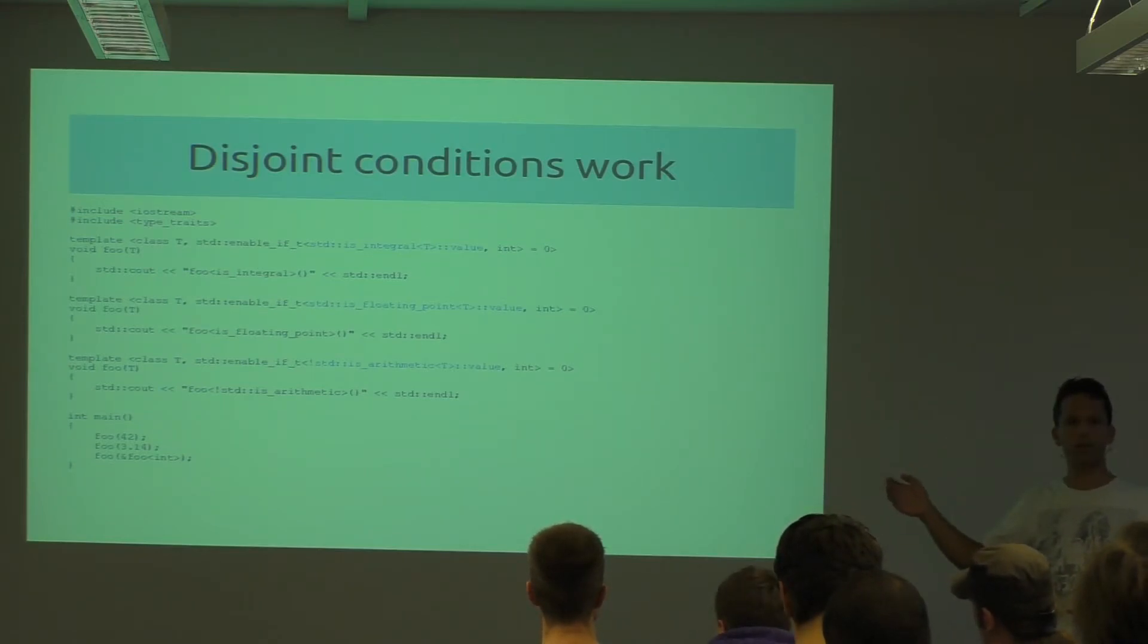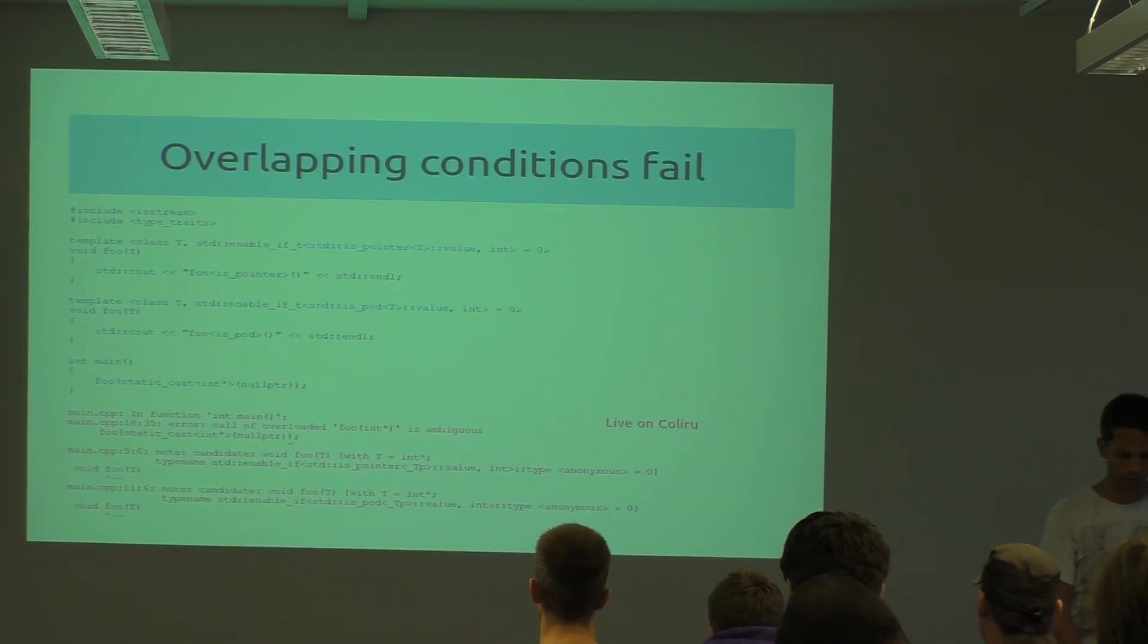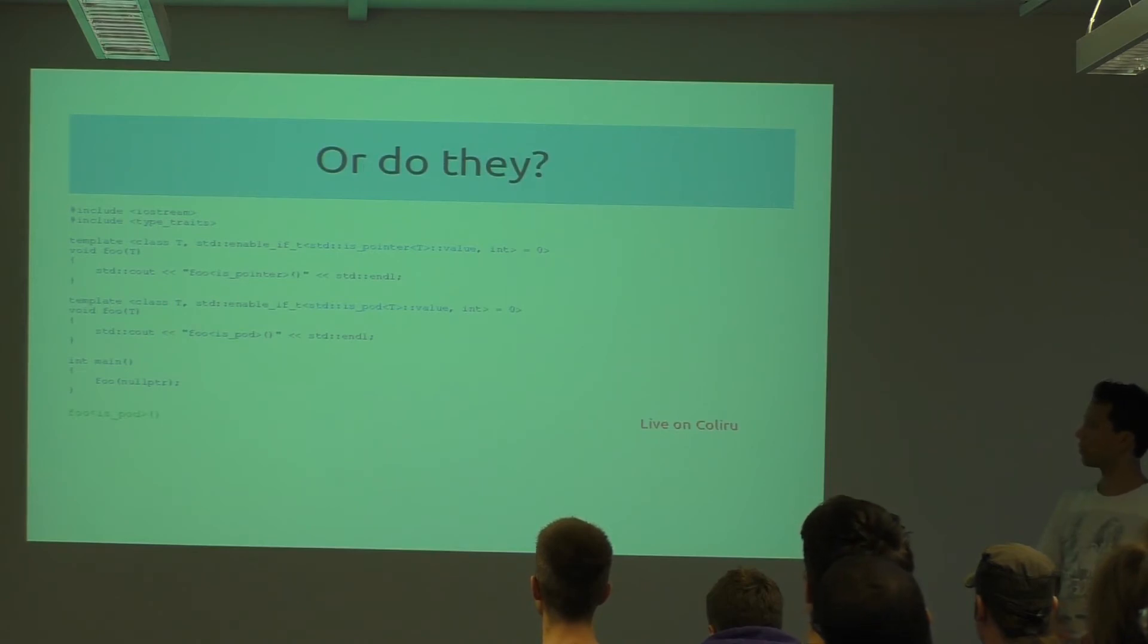But the big problem is if you have overlapping conditions, which is basically what Roland tried to tell us in his talk. Here we got is_pointer and is_pod. As I said before, something that is a pointer is also a POD. So if you invoke foo with a pointer, we got two equal functions in the overload set, and the compiler can't decide which one to choose. So this doesn't work, or does it? What exactly happened here? Anybody spots the difference?